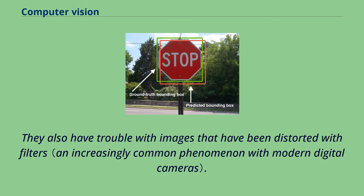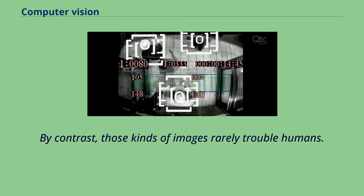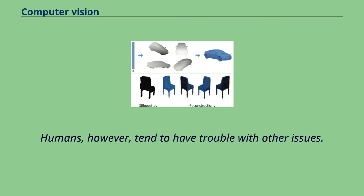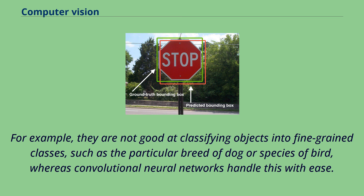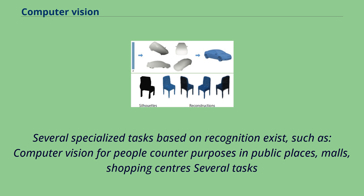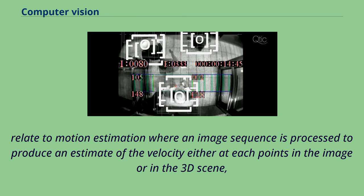By contrast, those kinds of images rarely trouble humans. Humans, however, tend to have trouble with other issues — for example, they are not good at classifying objects into fine-grained classes, such as the particular breed of dog or species of bird, whereas convolutional neural networks handle this with ease. Several specialized tasks based on recognition exist, such as computer vision for people counter purposes in public places, malls, and shopping centers. Many tasks relate to motion estimation where an image sequence is processed to produce an estimate of velocity either at each point in the image or in the 3D scene.